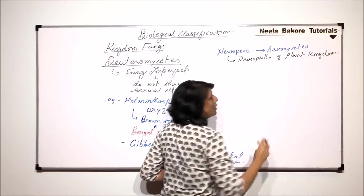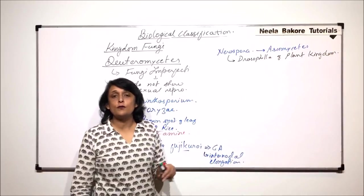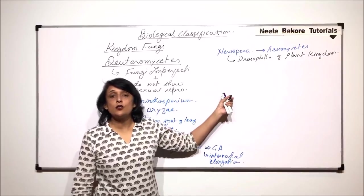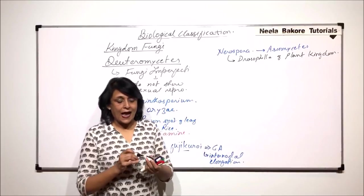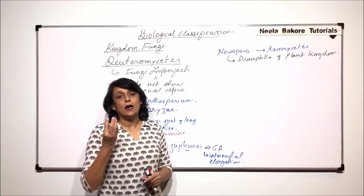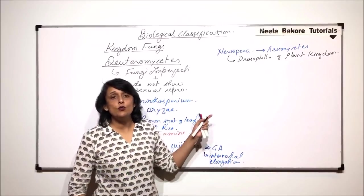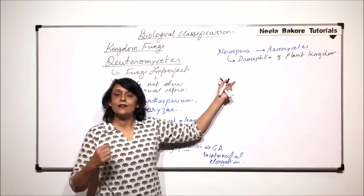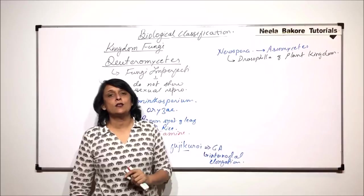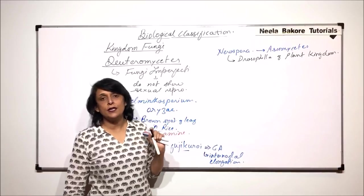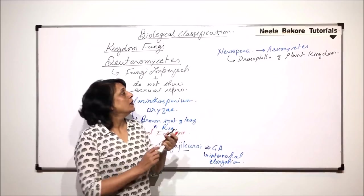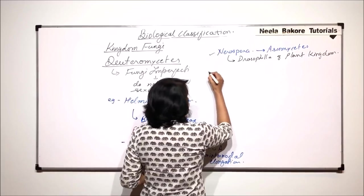The reason for calling this Neurospora the Drosophila is because it has been used for research work in genetics. When we talk of genetics, Drosophila is an important material which was used to study inheritance of various traits. Similarly, Neurospora has also been used to study genetics when it comes to plant genetics, so it is compared with Drosophila.